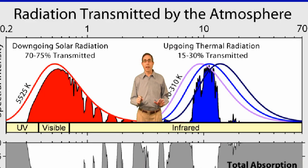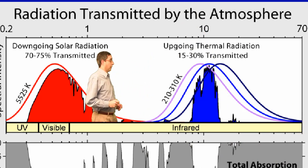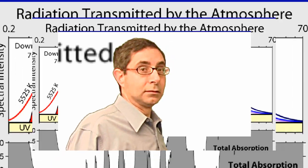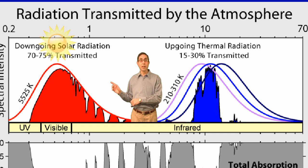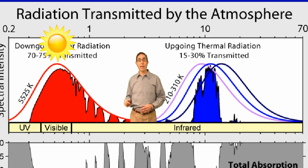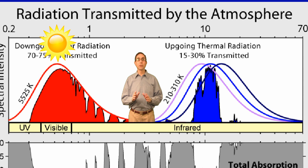In order to understand this graph, we first have to divide it in half. The left side shows the incoming shortwave radiation from the Sun that passes down through the atmosphere. This is called the solar window.